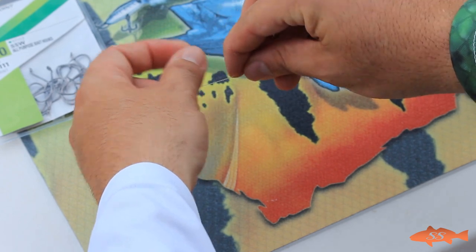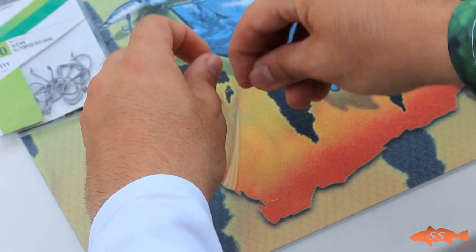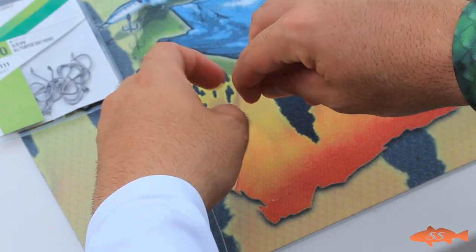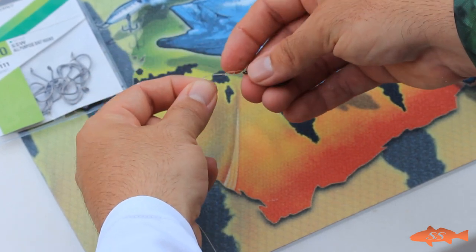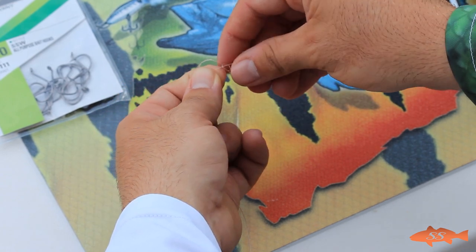Alright, then what you want to do is just take two or three wraps around the main line. And then you take the tag end and you run it back through the loop that you just created.